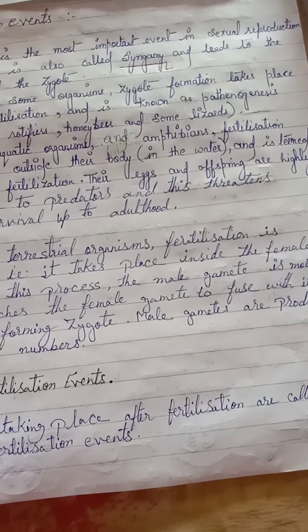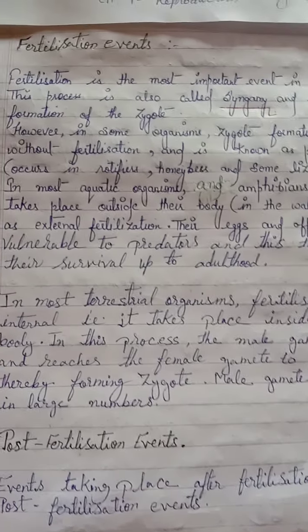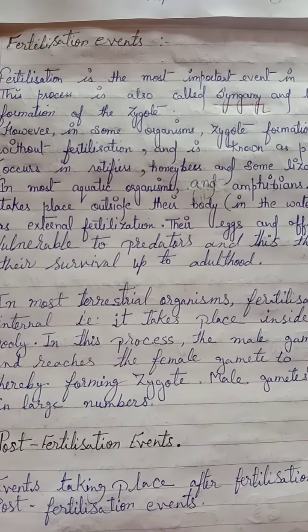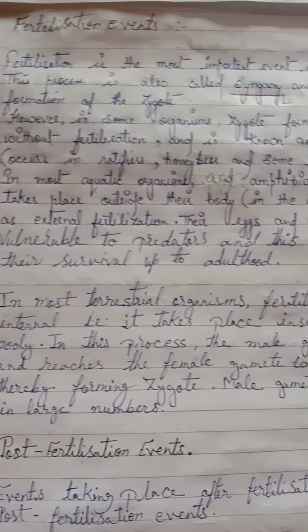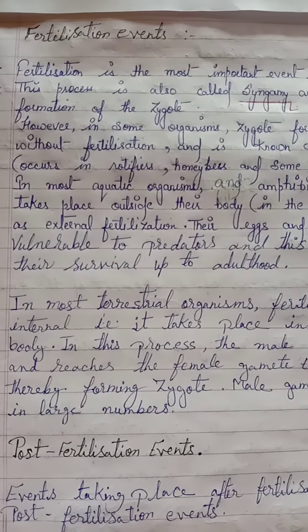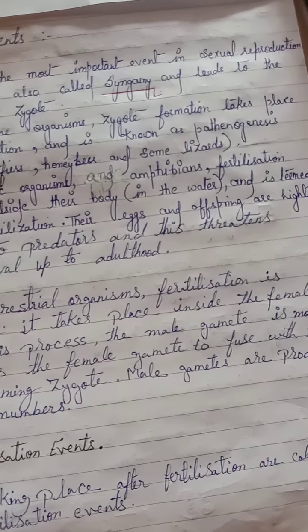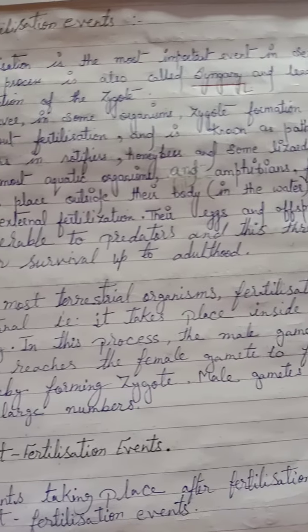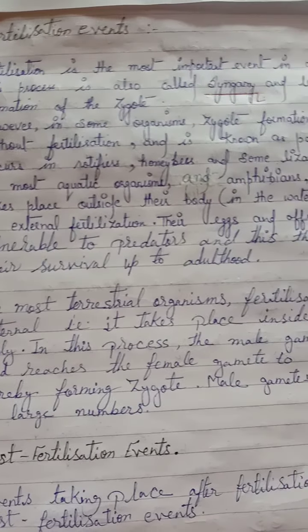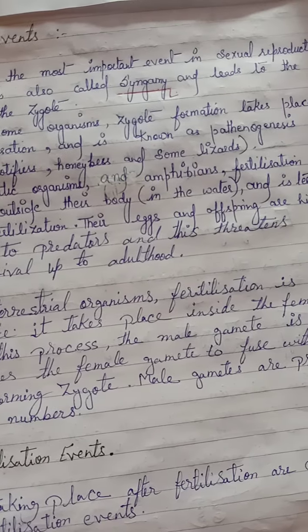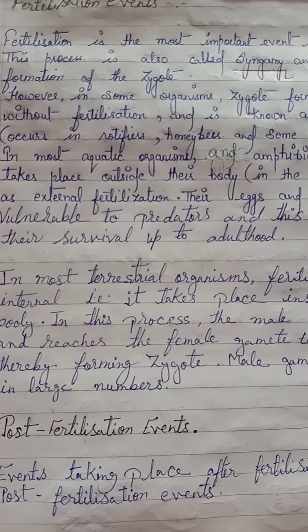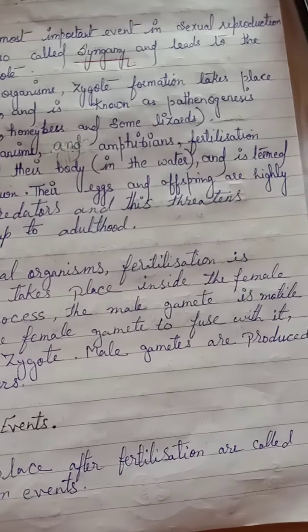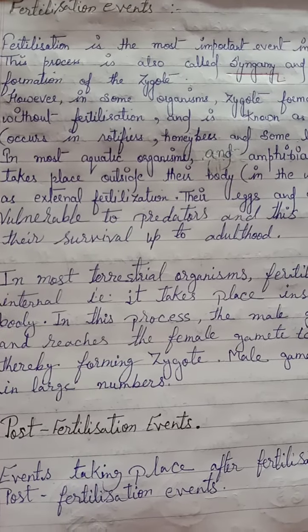In most terrestrial organisms, fertilization is internal — that is, it takes place inside the female body. In this process, the male gamete is motile and reaches the female gamete to fuse with it, thereby forming the zygote. Male gametes are produced in large numbers.